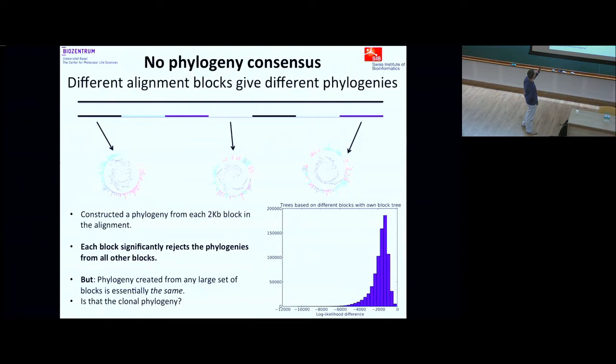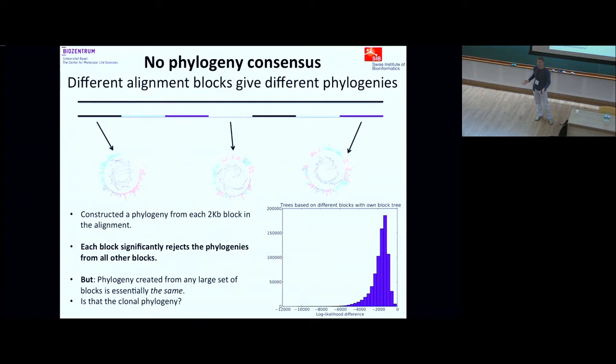The question is: how does this affect reconstruction of your phylogeny from DNA sequences? We took our big multiple alignment — 3 million base pairs long, 92 strains — made a phylogeny from the entire alignment, then cut the alignment into blocks of one kilobase. We have about 3,000 blocks and made a phylogeny from each of these blocks. What we see is that every block has a different phylogeny.